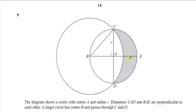The diagram shows a circle with center A and radius R — that's this small circle over here. Diameters CAD and BAE are perpendicular to each other. A is the center of the circle because these are the diameters. A larger circle has center B, and it passes through the points C and D. So both circles intersect at C and D.